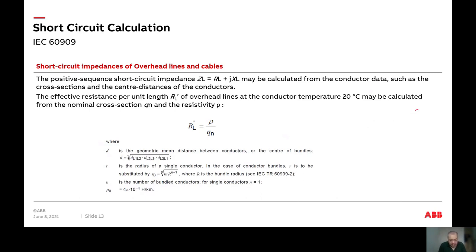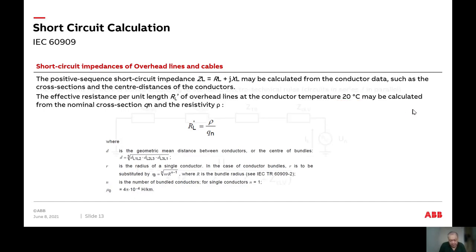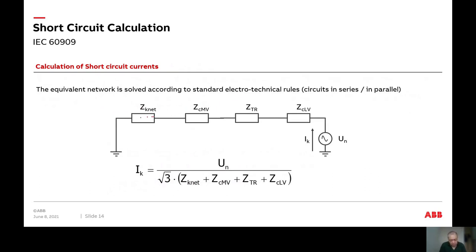For overhead lines and cables, the impedance data can be extracted from the cable data sheet. The conductor is normally rated at 20 degrees. The good thing about copper conductors is that when temperature goes up, impedance increases, which theoretically gives an additional reduction in short circuit current. As long as we use 20 degrees we are on the safe side, because as long as current is flowing the temperature will be quite high.